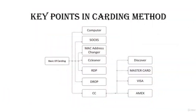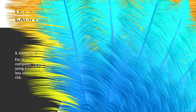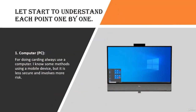Key points in carding include: computer, SOCKS, MAC address changer, CCleaner, RDP, drop, and credit card. There are four types of CC: Discover, Mastercard, Visa, and Amex. I will cover these in upcoming videos, so let's start to understand each point one by one.